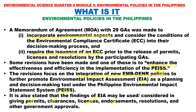The three major environmental problems facing government agencies are water pollution, air pollution, and waste products which affect soil quality. Water pollution of rivers, lakes, and marine water in the Philippines is now in a very serious state. Major rivers in Metro Manila are heavily polluted by industrial and domestic effluent and waste. In rural areas, water quality is dropping due to agricultural chemicals, chemical fertilizers, heavy metals, and toxic substances. The Philippines has many water-related laws, but enforcement is weak due to inadequate resources, poor database, and weak cooperation among agencies and local government units.